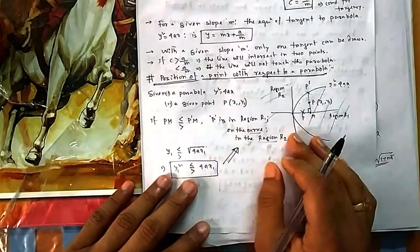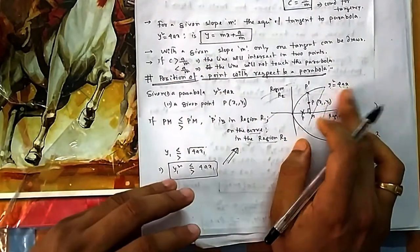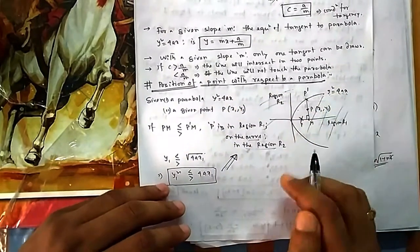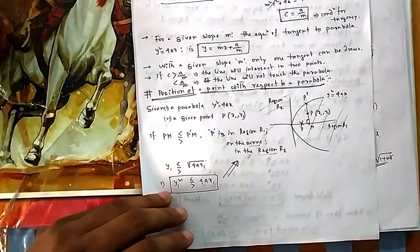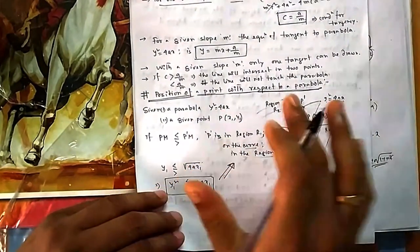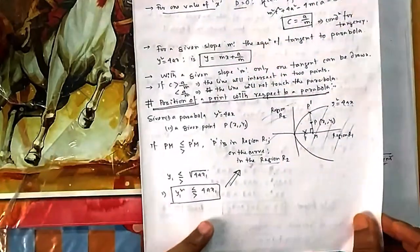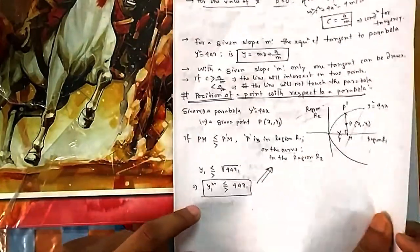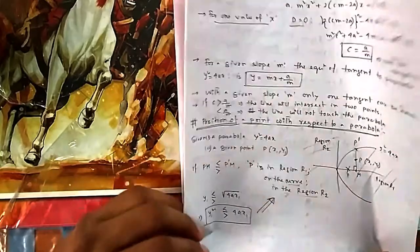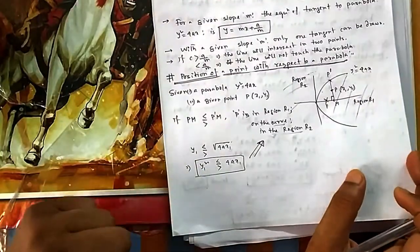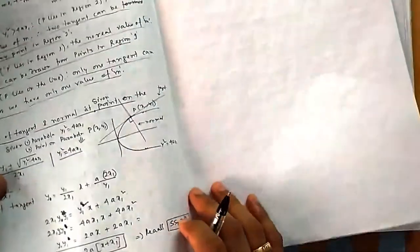This is similar to the circle. For a circle x² + y² = r², if x² + y² < r² the point is inside, if equal it's on the circle, and if greater it's outside. So if you clearly know the circle case, you can apply the same logic to the parabola and other conic sections in coordinate geometry.